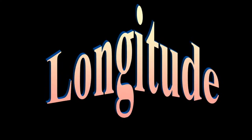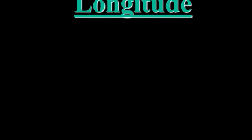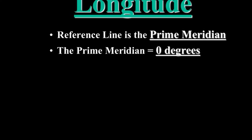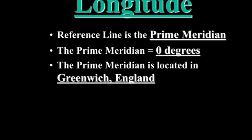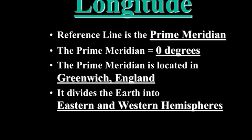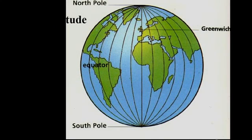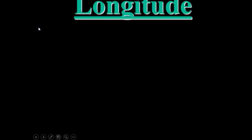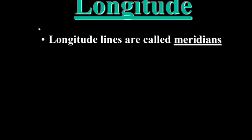We're ready to talk about longitude. In the last video we learned all about lines of latitude, which help us organize locations on the earth. Now we're going to talk about lines of longitude. The reference point for longitude is the prime meridian, which is at zero degrees and is located in Greenwich, England. It divides the earth into the eastern and western hemispheres. Every location on one side is considered west, and every location on the other side is in the eastern hemisphere.